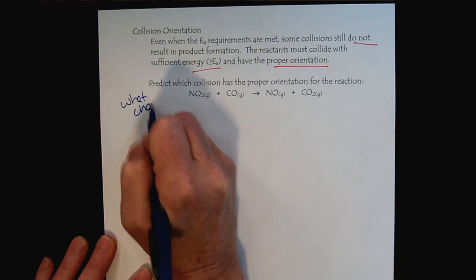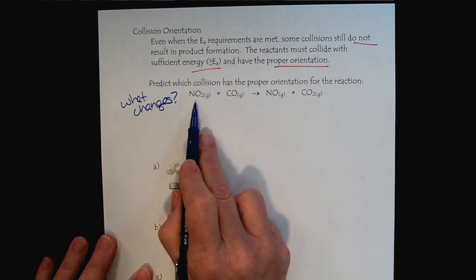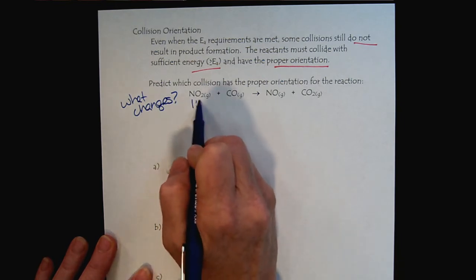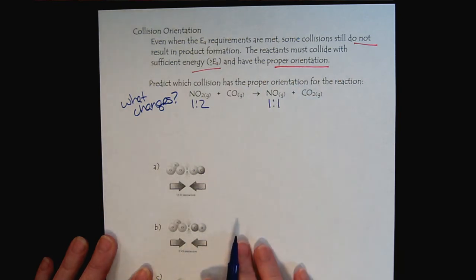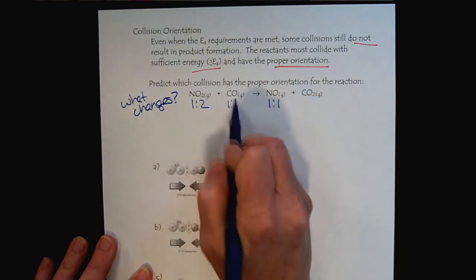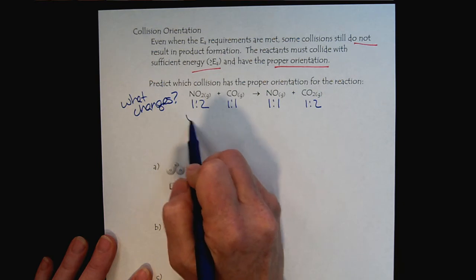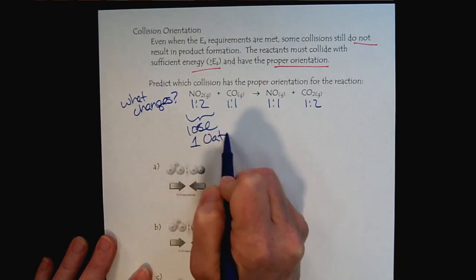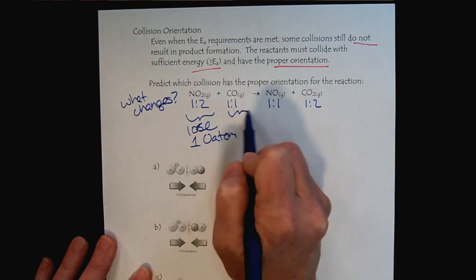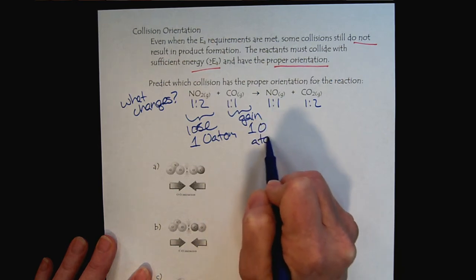What changes? So we see here that we have nitrogen in a one to two ratio with oxygen, and then it changes to one to one. And the carbon starts with a one to one ratio and moves to a one to two. So we see that we lose one oxygen atom here and we're going to gain one oxygen atom.